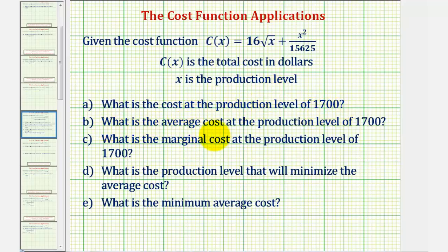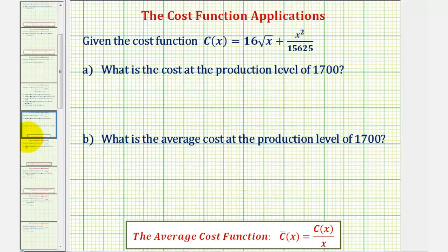b) What is the average cost at the same production level. c) What is the marginal cost at the same production level. d) What is the production level that will minimize the average cost. And e) what is the minimum average cost.